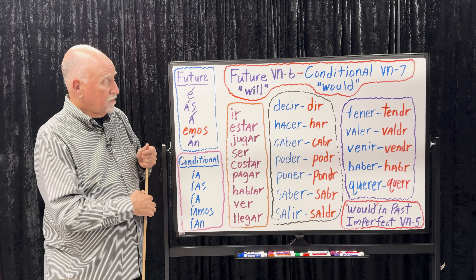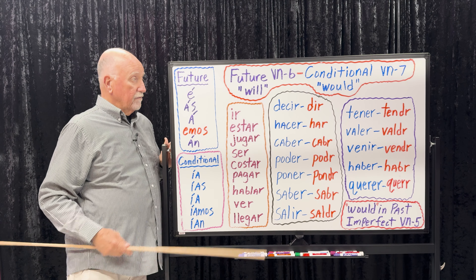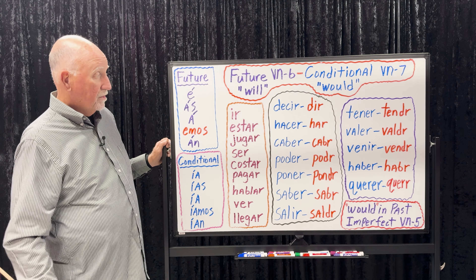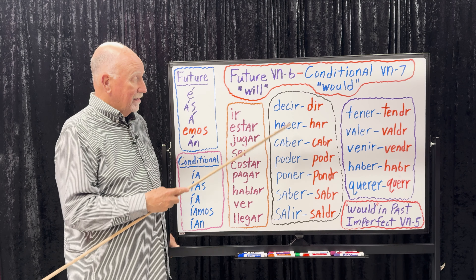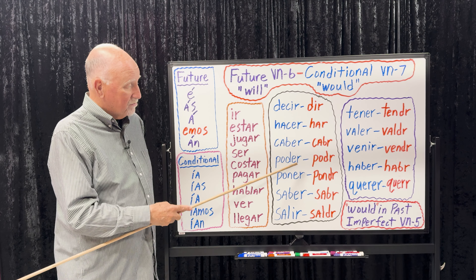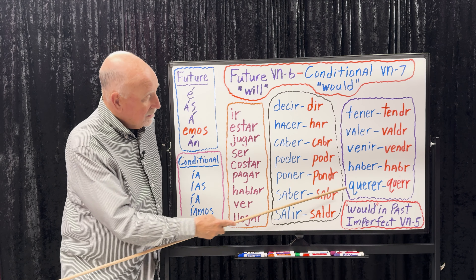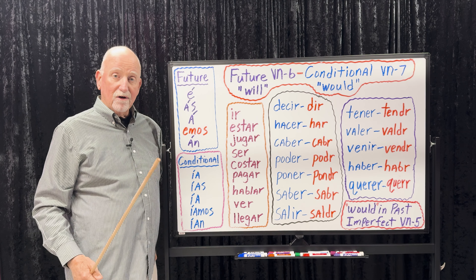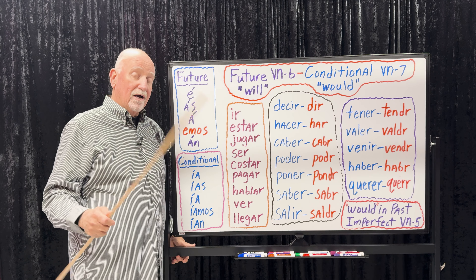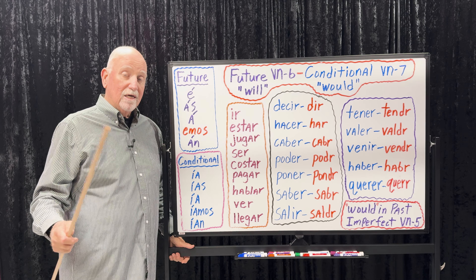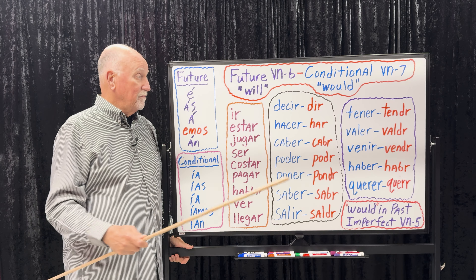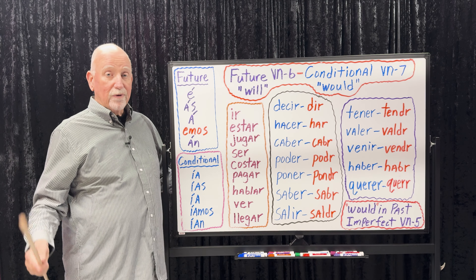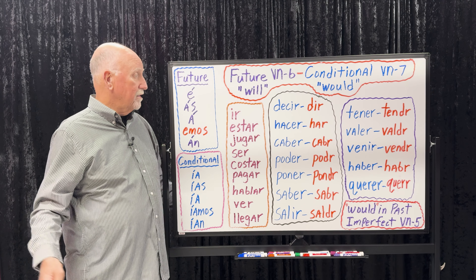Let's go to the irregulars now. The future and the conditional share the same irregular verbs. Most of them are IR and ER verbs. In fact, every single one of them is an IR or ER verb. There aren't many ER and IR verbs in Spanish, but a lot of them are very potent and heavily used — and they're irregular or stem-changing in one way or another.